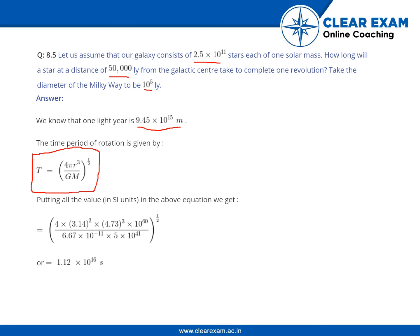Putting all the values in SI units in the above equation we get 4 into pi squared times 4.73 cubed. This is the radius. The gravitational constant is 6.67 into 10 power minus 11 newton meter squared per kilogram squared, and mass is 5 into 10 power 40. When you find the values of this, we will be getting around 1.12 into 10 power 16 seconds.